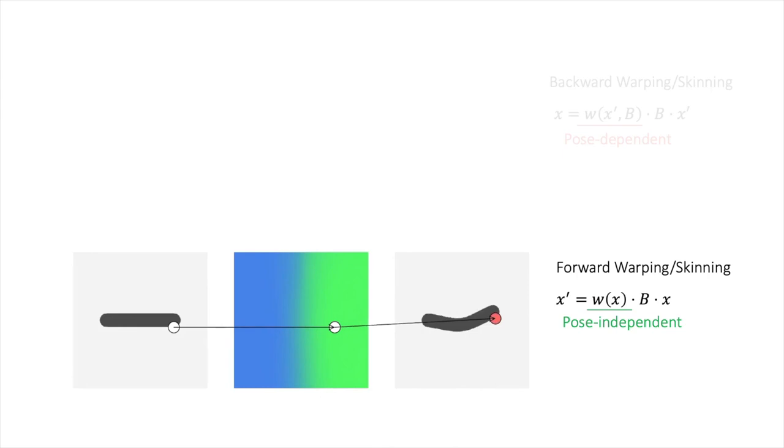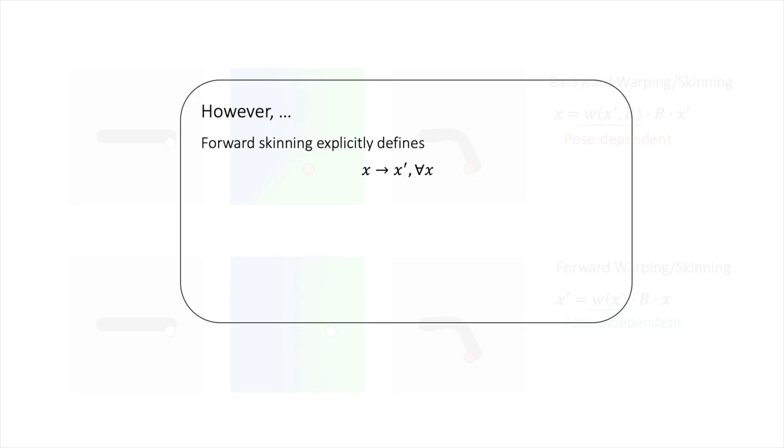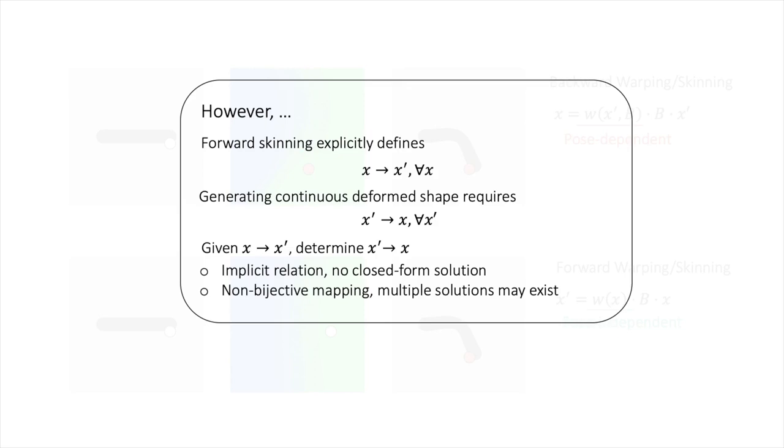While forward skinning defines the mapping from canonical to deformed space, we also require the inverse mapping for learning a shape model in canonical space. As this inverse relation is a one-to-many mapping and as it is only implicitly defined, there exists no closed form solution to it.